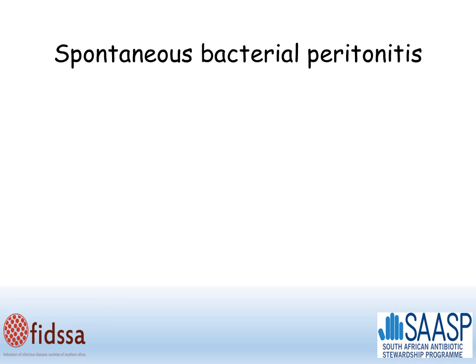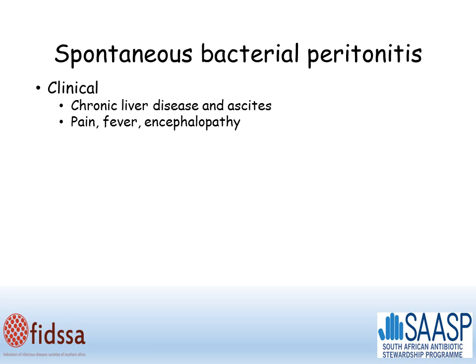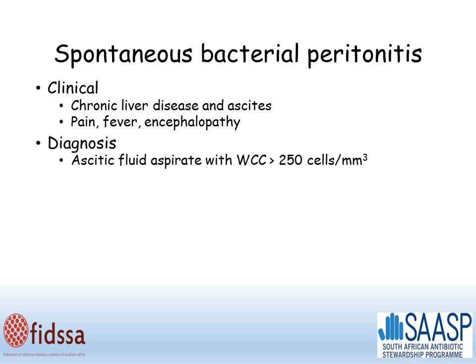Turning now to spontaneous bacterial peritonitis. Clinically, these patients have chronic liver disease and ascites, and they present with abdominal pain, and may have fever and encephalopathy. It's important to make the diagnosis before considering empiric antibiotic therapy. The key procedure is an ascitic fluid aspirate, sent to the lab for microscopy and cell count. If the cell count is greater than 250 cells per millimetre cubed, then the diagnosis is likely; if it's less than that, the diagnosis of SBP is essentially excluded. SBP can also be diagnosed if the culture of the ascitic fluid is positive.